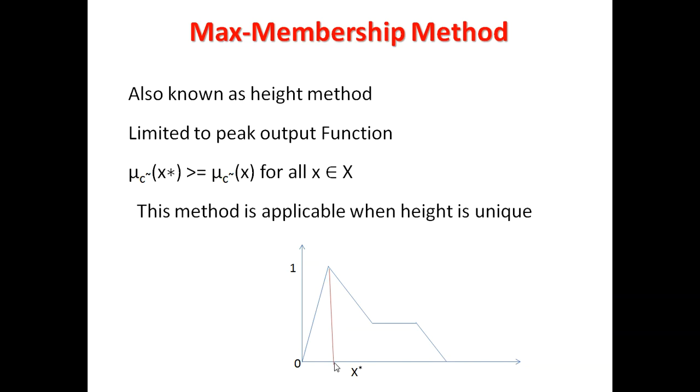Because we are discussing this in defuzzification, this is a method of defuzzification. We have learned that we convert the fuzzified values into crisp value. This is a method by which you can do that. If we have the output function basically Height Method, if we have the value limited, it means that our height is unique. In that case, we can say that the X value will be returned as a crisp output of that specific set.